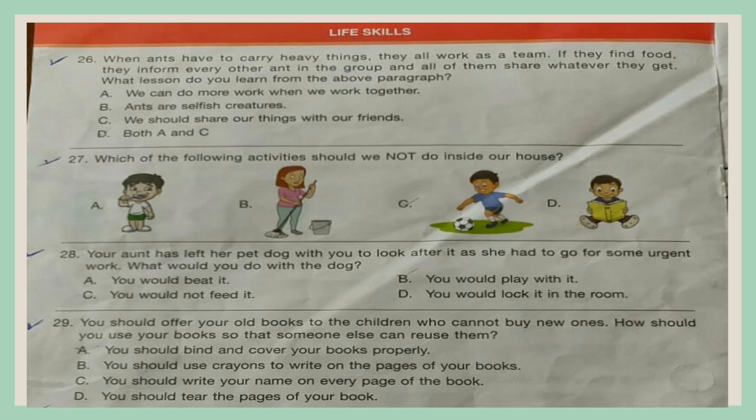Question 28. Your aunt has left her pet dog with you to look after it as she had to go for some urgent work. What would you do with the dog? A. You would beat it, B. You would play with it, C. You would not feed it, D. You would lock it in the room.